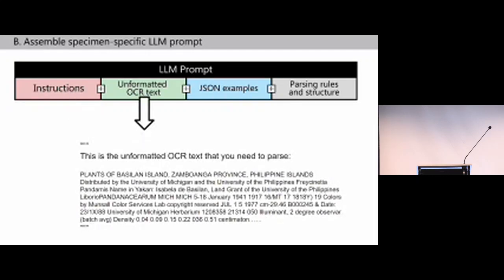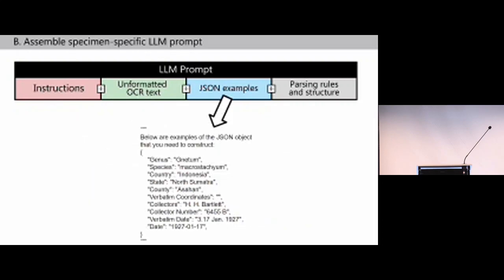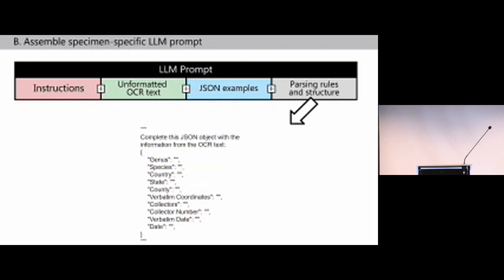Next, we show it the OCR text it will have to sort through. After that, we give it JSON examples—we use a vector embedding search to find closely matching already-transcribed entries, turn those into a JSON object, and show those to the large language model as examples. Finally, we give it a few more parsing instructions and show it an empty JSON dictionary that it can fill out.